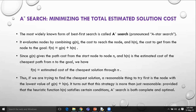Here, n represents the current node. Thus, we are trying to find out the cheapest solution. A reasonable thing to try is the first node with the lowest value of g.